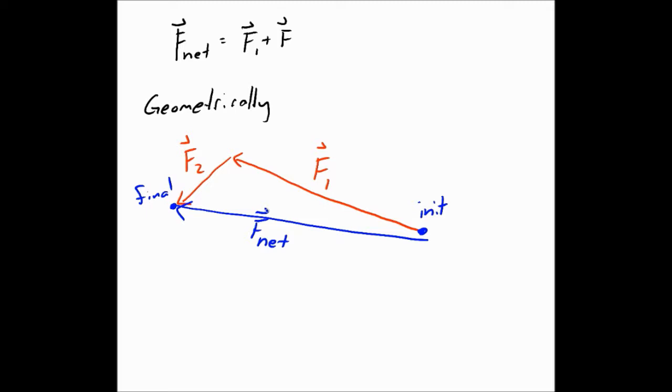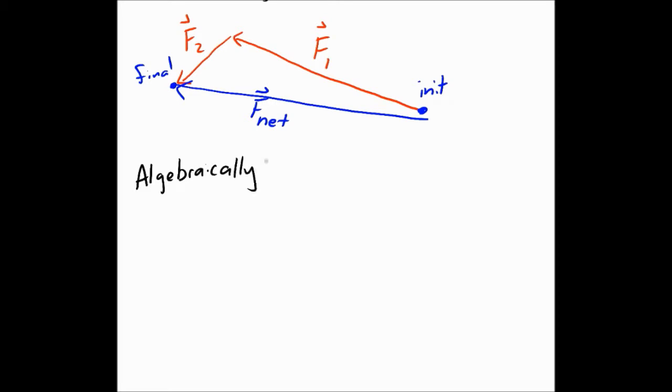Let's do it algebraically with values, with numbers, and see if it comes out to be like that. The first rule, if you're going to do it algebraically, is you must have your vectors in Cartesian form. And right now we don't. We have magnitudes and angles. So we need to convert them.